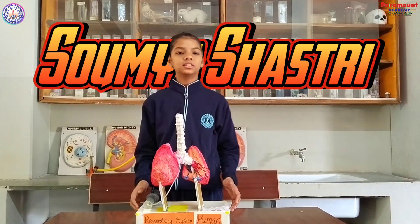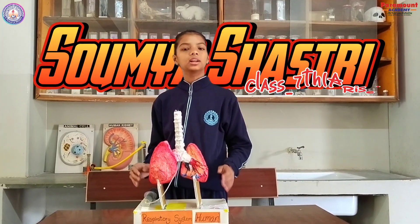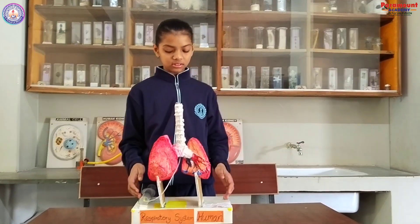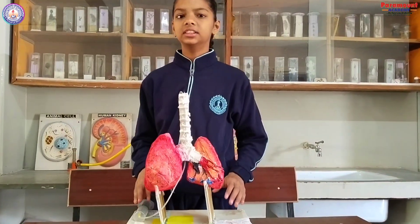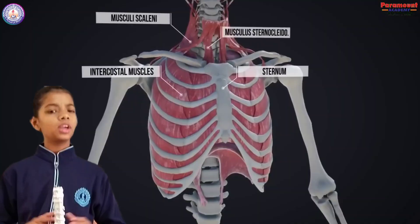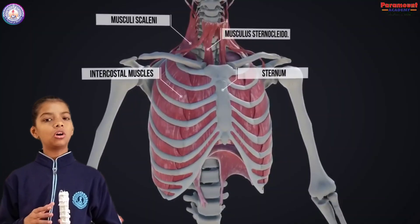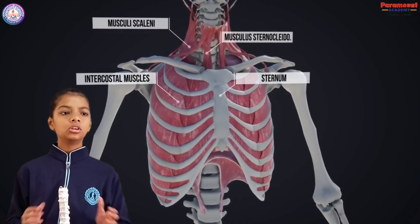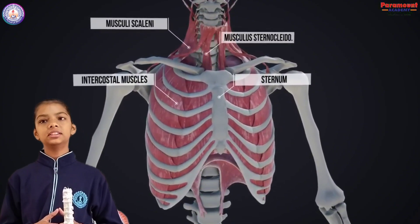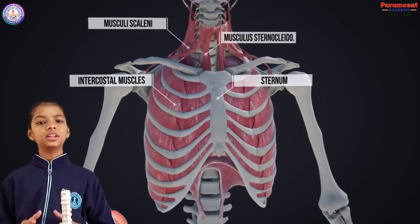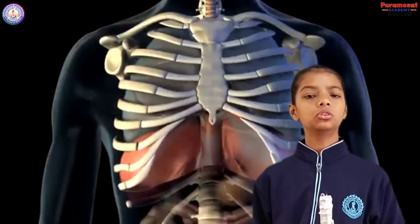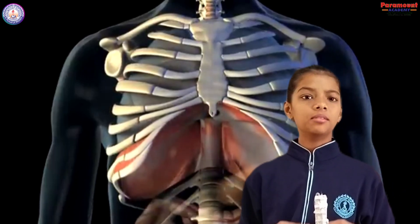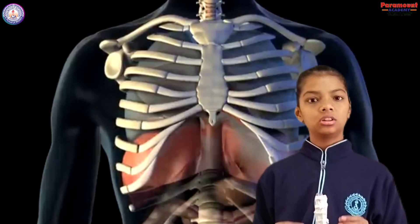Hello everyone, I am Soumya Shastri from class 7th and this is the working model of the Human Respiratory System. Today I am here to talk with you about the Human Respiratory System. The Human Respiratory System is a combination of organs which help you to breathe in oxygen and breathe out carbon dioxide.